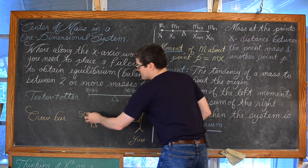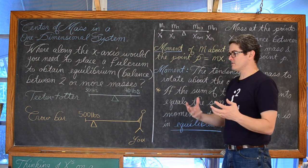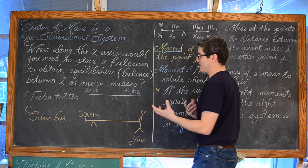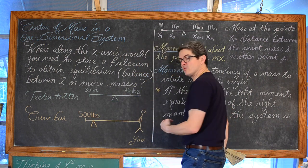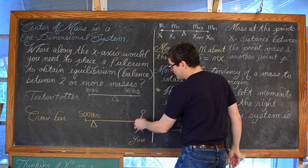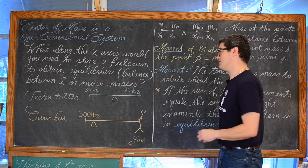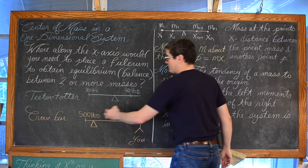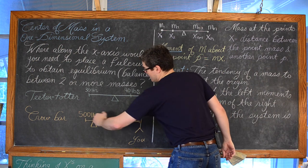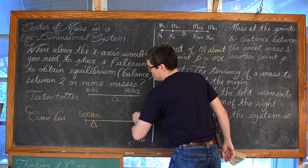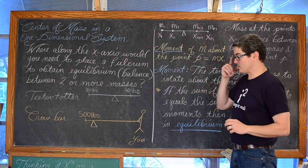If you want to lift something very heavy — say a rock or a boulder that's 500 pounds — you would need a big crowbar or leverage bar. And if you weigh maybe 150, 180, or 200 pounds, you'd have to be much further away to create the leverage you would need to have balance in that one-dimensional system.